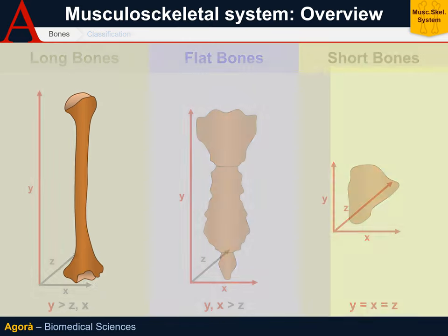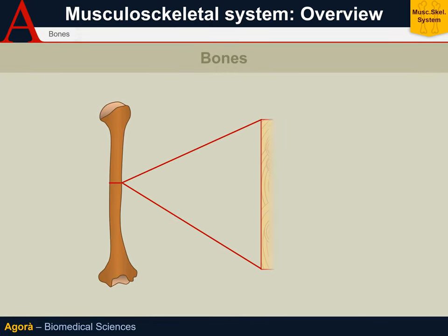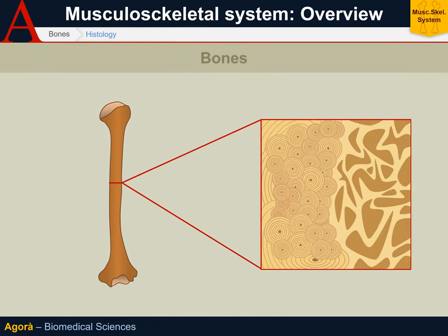As for the histology of bone, it is composed of a spongy part and a compact part, which in turn is composed of osteons, in the middle of which are vessels that nourish the bone. The bone lamellae are soaked with osteocytes, giving the bone its typical microscopic appearance. For more on this part, the relative video can be found in the histology playlist.